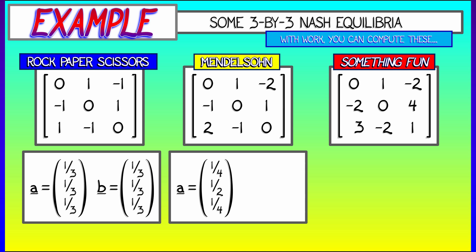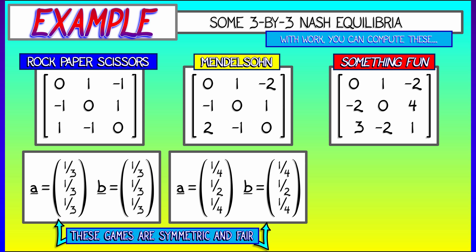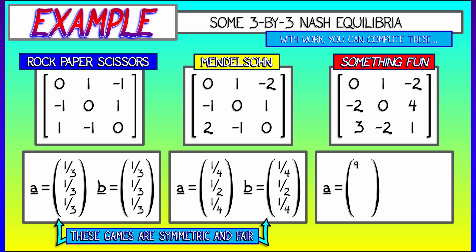For the Mendelssohn game, it's similar. A and B have the same optimal probability vectors. Although in the Mendelssohn case, you want to play strategy two twice as often as you play strategies one or strategy three. Now, both of these games are symmetric. They're fair. No player has an advantage. The net expected outcome is zero at the Nash equilibrium. Over the long run, it's a tie.